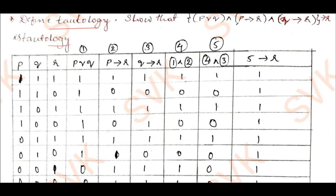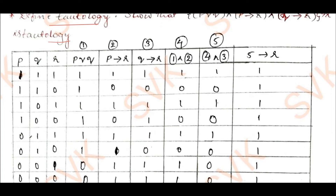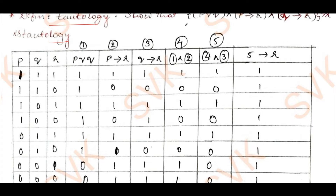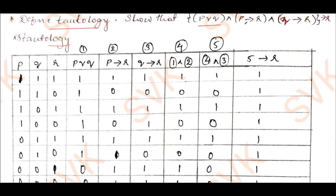As we have three propositions p, q, r, we need eight truth values, which I have listed. I will find out p disjunction q first, then p implies r, then q implies r — naming those columns 1, 2, and 3. Then I will find the conjunction of columns 1 and 2, naming that column 4, and then column 4 conjunction column 3, naming that column 5.